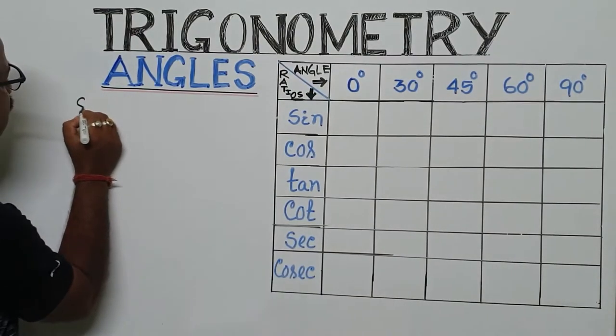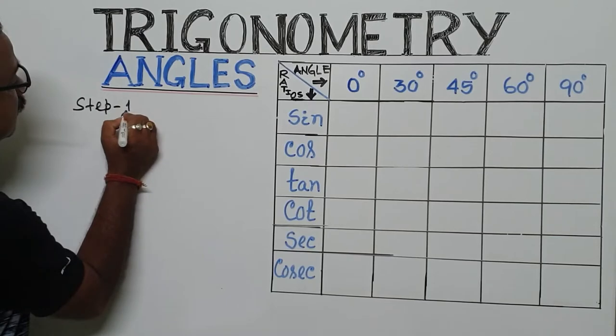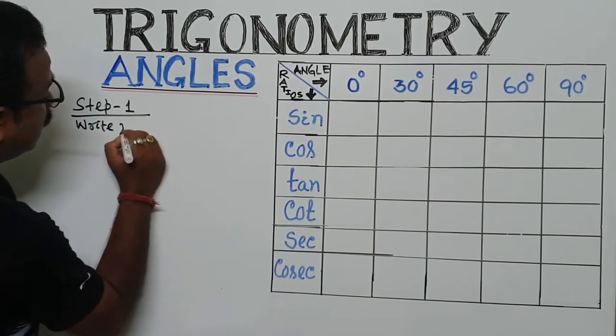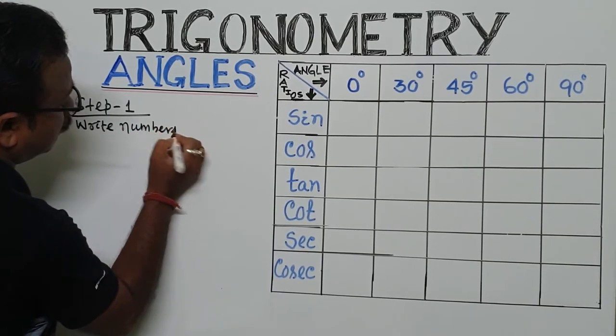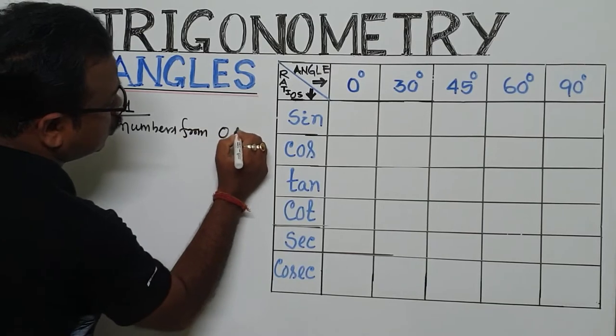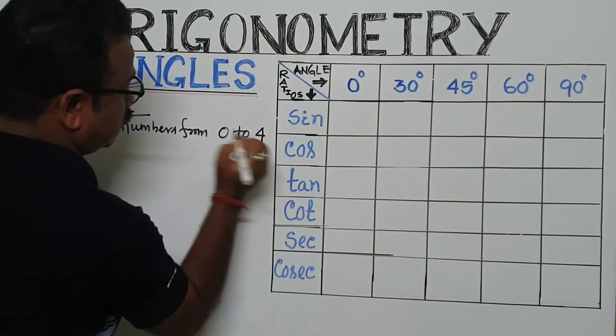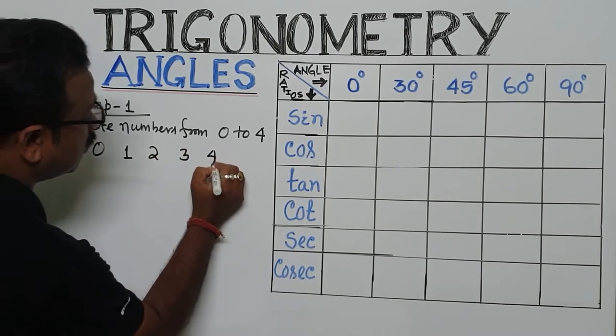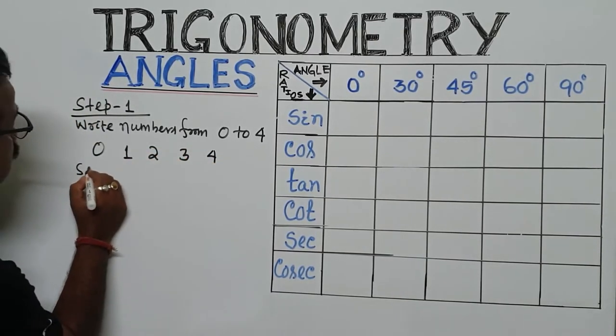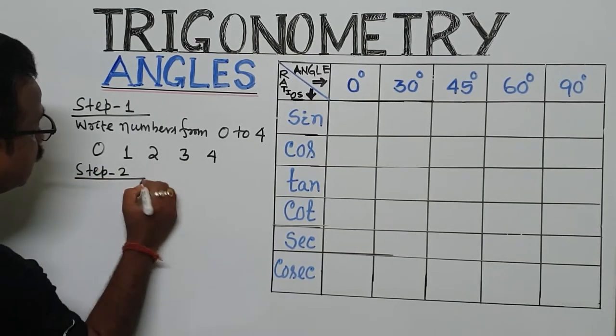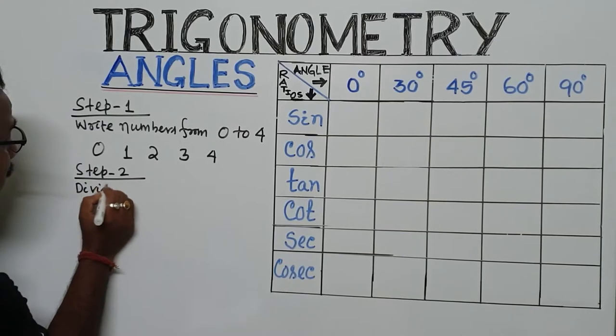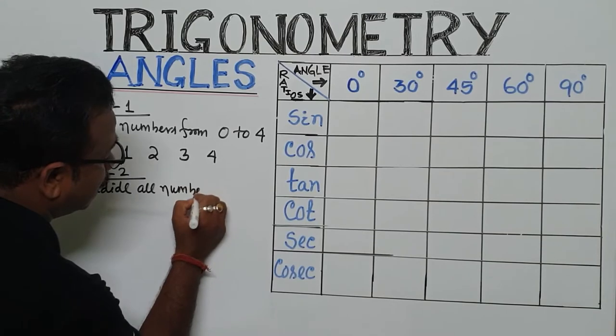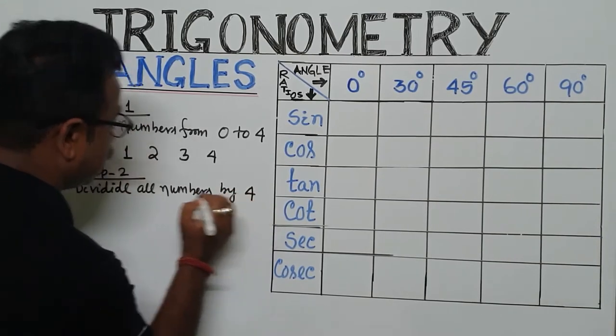Let's start with the most small and smart way. Step 1: Write numbers from 0 to 4. So, 0, 1, 2, 3, 4. Then Step 2.